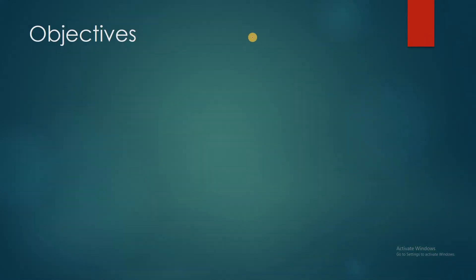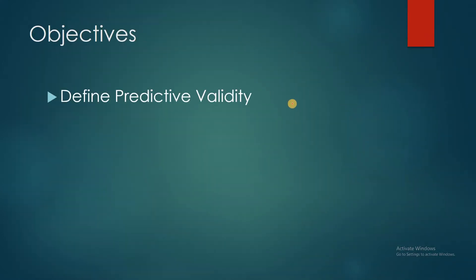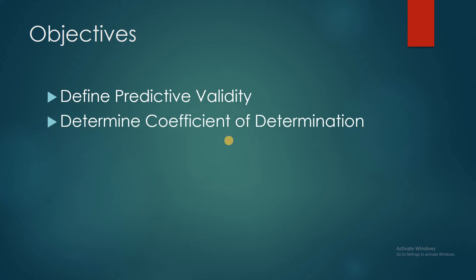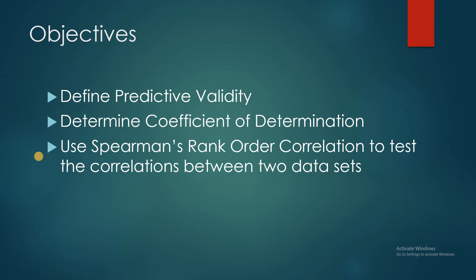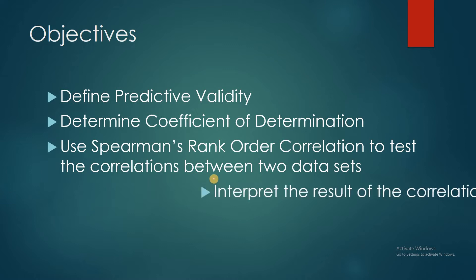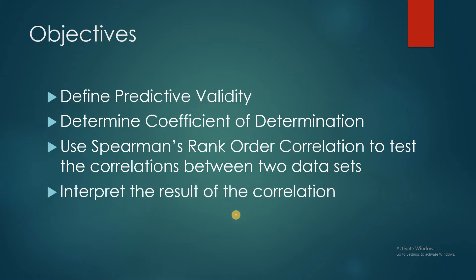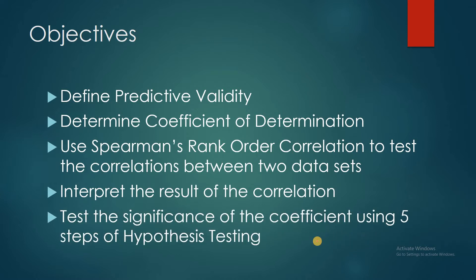I have five objectives for this video. The first one is to define predictive validity. The second one, to determine the coefficient of determination. The third, use Spearman's rank order correlation to test the correlations between two datasets. Then we're going to interpret the result of that computed correlation. And finally, we're going to test the significance of the coefficient using five steps of hypothesis testing.